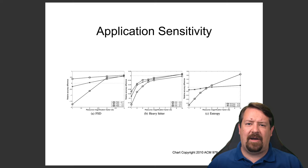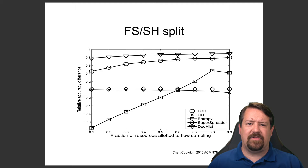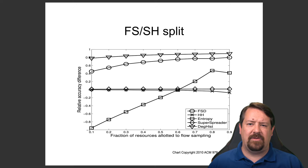Depending on how efficiently resources are used, the result could be significantly worse or significantly better than the application-specific method, which speaks to the importance of the assumptions about resources needed to compute sample and hold or flow sampling. The authors then look at splitting resources between flow sampling and sample and hold. On the left side of the graph, almost all resources are dedicated to sample and hold; on the right side, 90% are dedicated to flow sampling. Degree histogram and flow size distribution are represented well even with a relatively small amount of resources dedicated to flow sampling, but accurately computing entropy is highly dependent on the fraction allocated to flow sampling. Super spreaders and heavy hitters are computed comparably well to existing approaches regardless of the resource split.